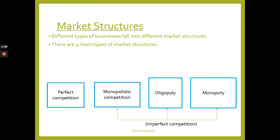Different types of businesses fall into different market structures. There are four main types: perfect competition, monopolistic competition, oligopoly, and monopoly. Monopolistic competition, oligopolies, and monopolies are each a type or form of imperfect competition.